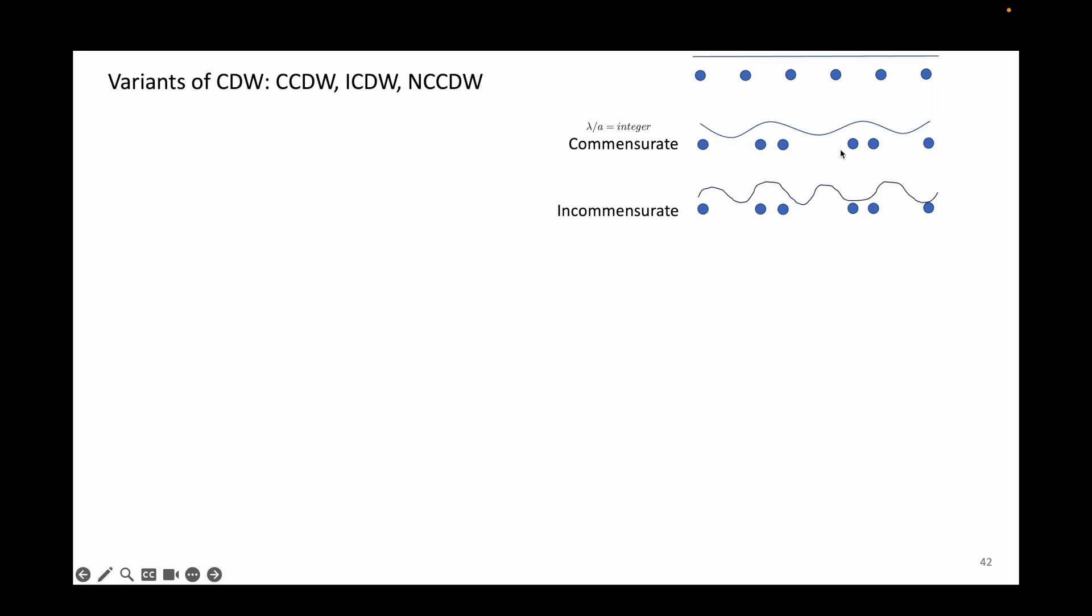If the charge density wavelength is not an integer multiple of the crystal underneath, and therefore the charge density wave order seems to be independent of the crystal in order, then this state is said to be incommensurate. Nearly commensurate is somewhere in between, as the name suggests.